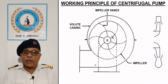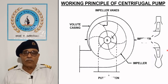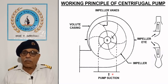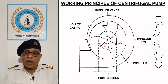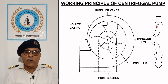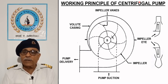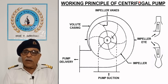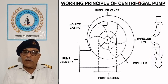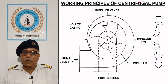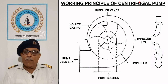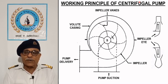The impeller rotates in a volute casing which converts the kinetic energy of the liquid into pressure energy. Liquid enters the impeller eye from the inlet connection axially and is delivered to the volute casing radially. As the liquid is thrown out, a vacuum is created at the eye of the impeller and more liquid is induced to fill up the space. Once liquid reaches the eye, pumping starts and it continues as long as the required net positive suction head is available.